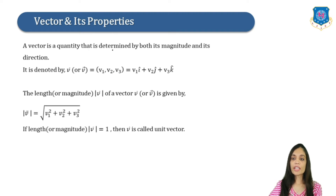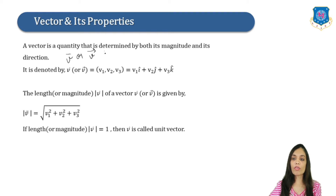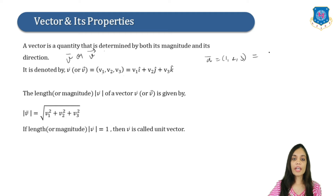A vector is a quantity that is determined by both its magnitude and direction. It is denoted by V bar or vector V bar. We can denote it using an arrow notation or write it as (V1, V2, V3), which equals V1 î + V2 ĵ + V3 k̂. For example, if A bar is (1, 2, 3), we write it as î + 2ĵ + 3k̂.